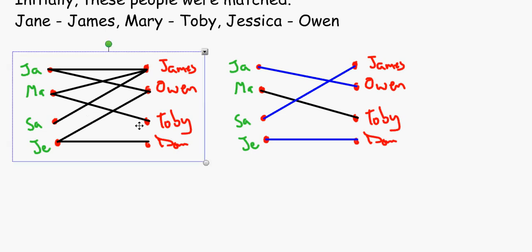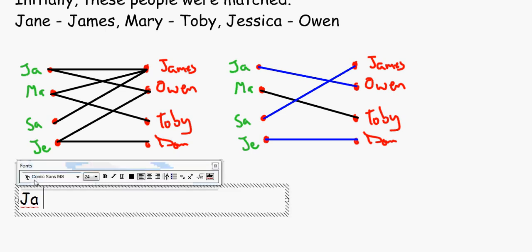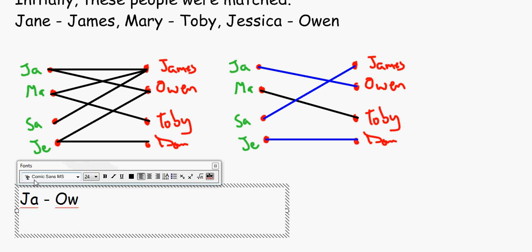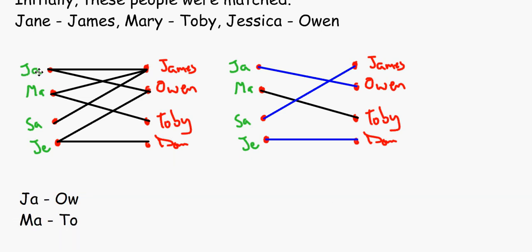Now, what you'd just basically do, if you just need to just to be safe, you'd say Jane is matched up with Owen, Mary matched up with Toby, and so on like that. Okay? And that's all you need to do.